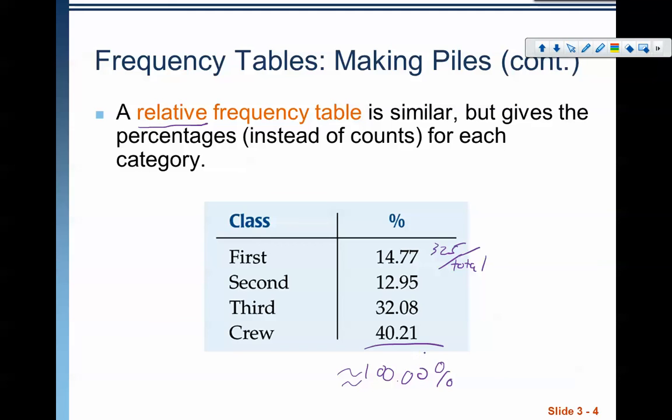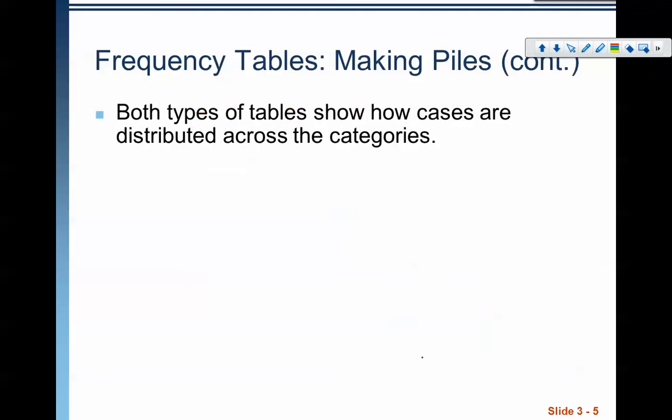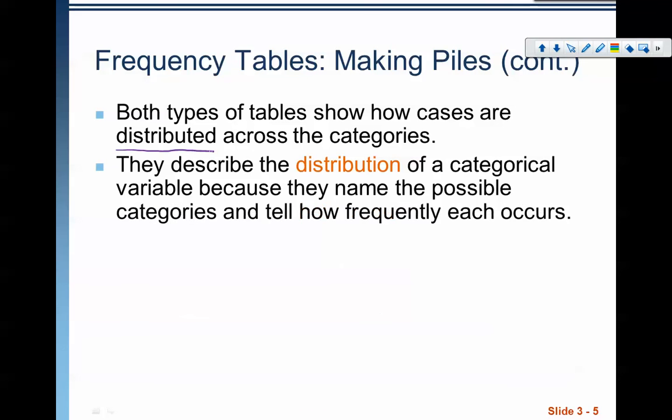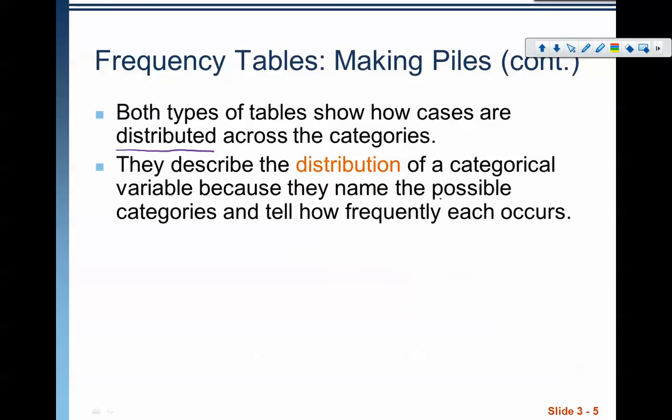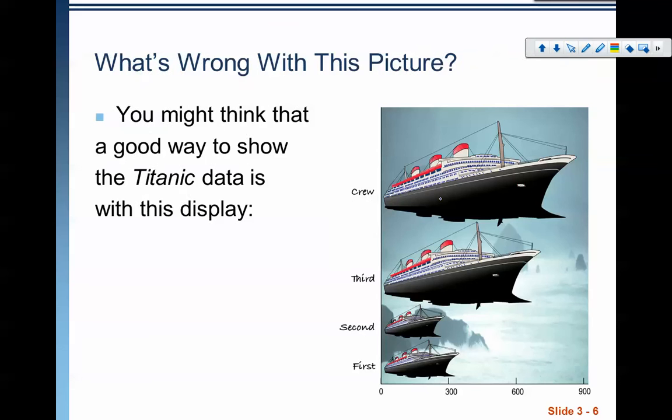Both types of tables show how cases are distributed across the categories. This word right here is key—they describe what's called the distribution of a categorical variable because they name the possible categories and tell how frequently each occurs. We will use this term distribution often, and all it refers to when we say distribution is how do the counts fall, how are the counts distributed amongst the categories. Frequency tables describe the distribution of categorical variables.